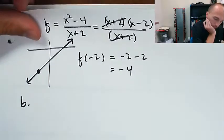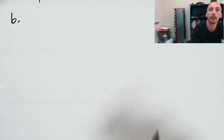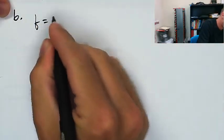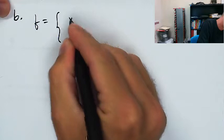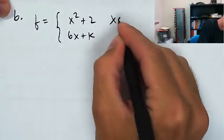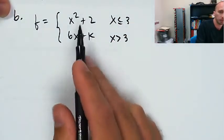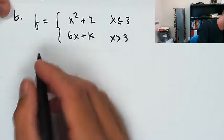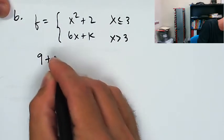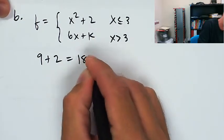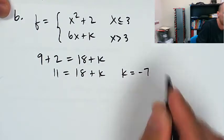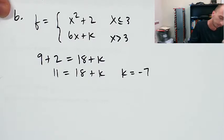Find the value of k that makes f continuous for all real numbers. I've got f equaling x squared plus 2 and 6x plus k. For x less than or equal to 3, x greater than 3. So we're going to set these two pieces of graph equal to each other at x equals 3. x squared plus 2 is going to be 9 plus 2 equals 6 times 3 is 18 plus k. I've got 11 equals 18 plus k. It feels to me like k is going to need to equal negative 7.